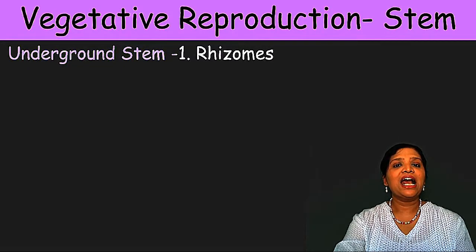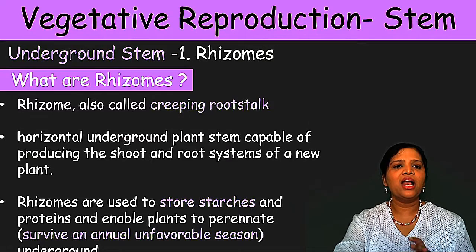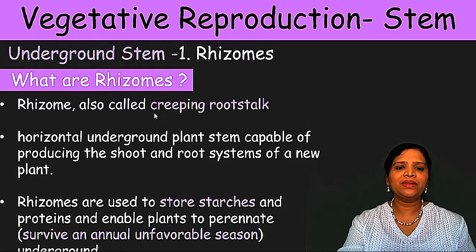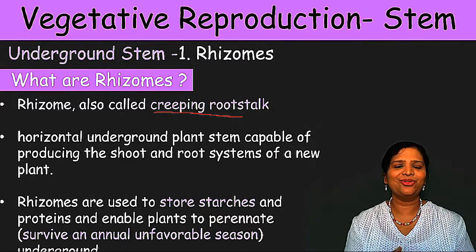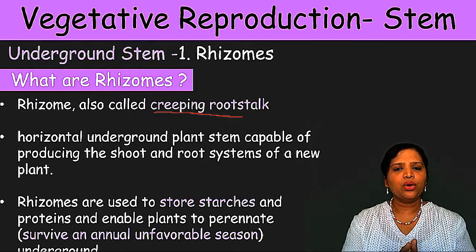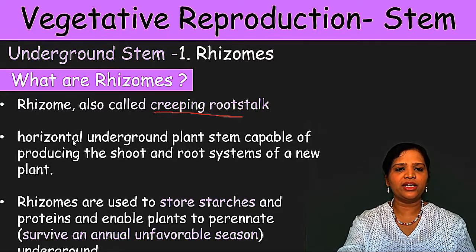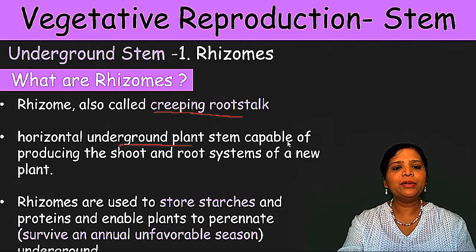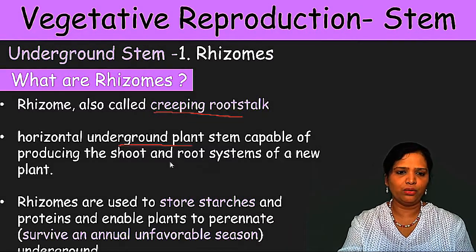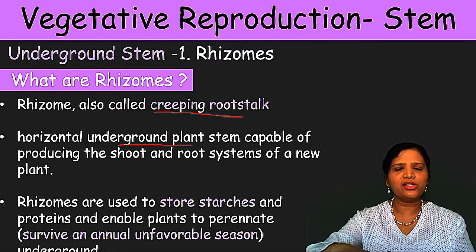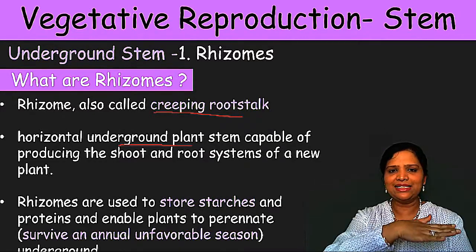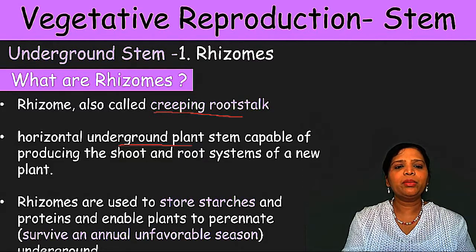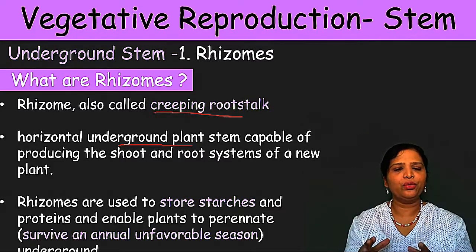What are rhizomes? Rhizomes are also called creeping rootstock. Creeping means moving from one place to another, like crawling. Rhizomes are horizontal underground plant stems capable of producing the shoot and the root system of a new plant. Horizontal means they run along the surface underground. They are capable of producing both the shoot and the root of a new plant. Rhizomes particularly store starch materials and proteins — this is a very important point to remember.